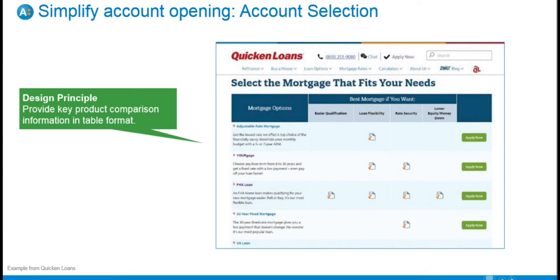While you may want to tout every perk and disclose every gotcha for each account option, consider that the user wants to make this decision as quickly as they can. Shopping for an account is not as much fun as shopping for a ring or a set of golf clubs — it's just not the kind of thing consumers want to spend a lot of time doing. Our design principle here is to provide key product comparison information in table format, displayed in plain view and easily comparable — not through progressive disclosure or other clever ways of hiding those key details.